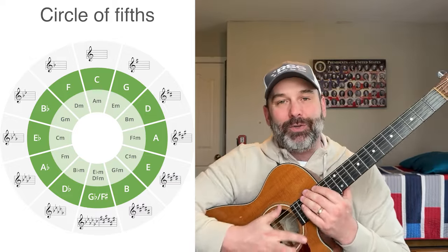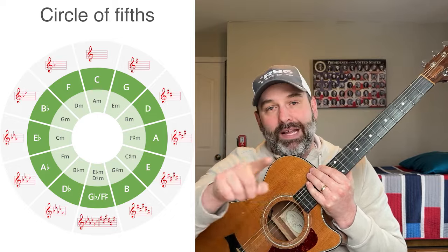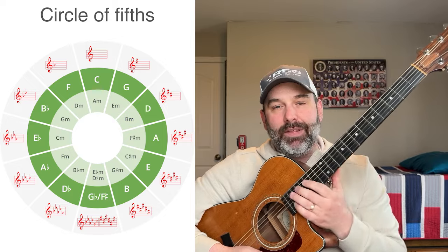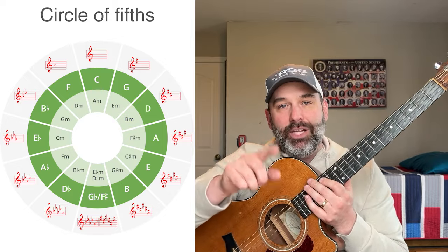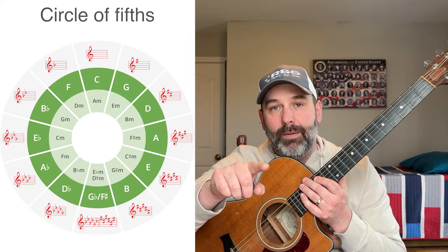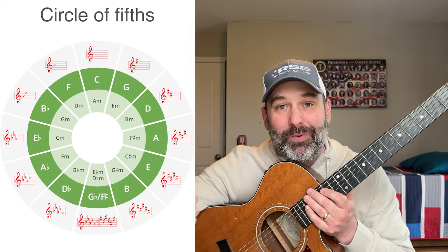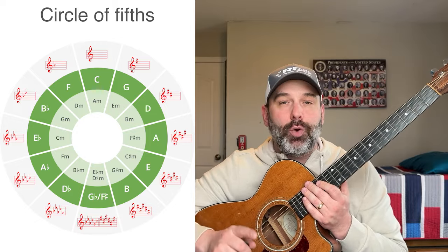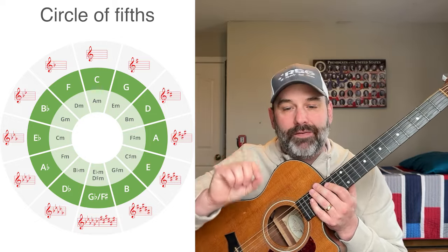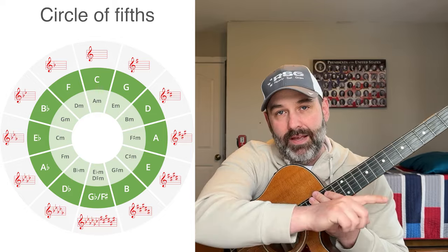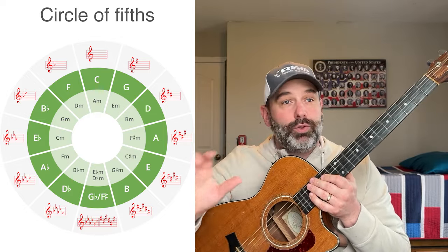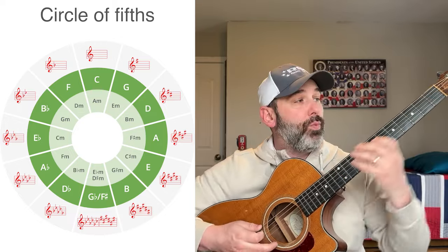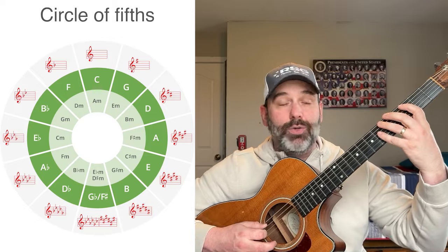Along the top ring you see these treble clefs — that little weird S-shaped thing in music notation. In each one, except the top one, there's either a hashtag — called a sharp — or a little music note, which is a flat. That shows you how many sharps and how many flats are in each key. If you look at C, there are no sharps or flats, which means C is natural. There are no sharps or flats in this key, which is why the scale goes C, D, E, F, G, A, B back to C.